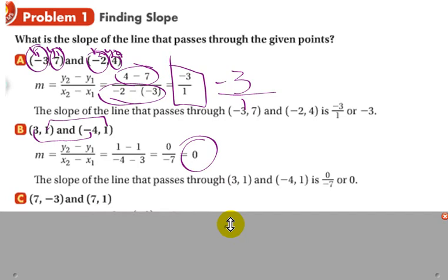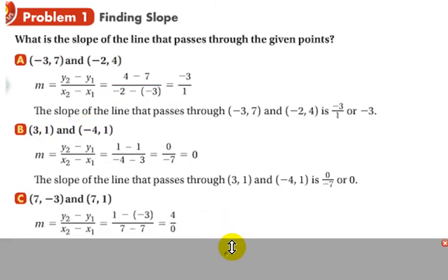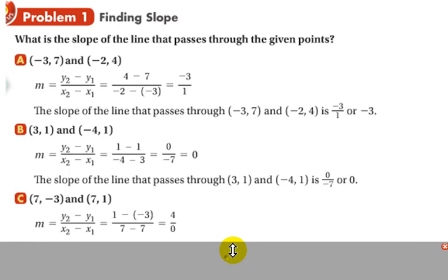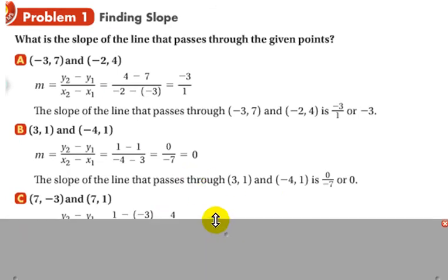Now, when we look at this third example, you've got 1 minus a negative 3 over 7 minus 7. When you do that, you get 4 over 0. Well, that's not a valid number. That is undefined. There is no slope.